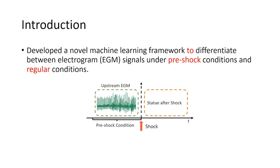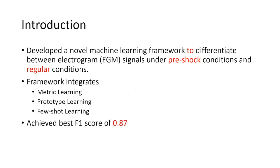This framework is designed to categorize EGM signals into one of two categories, normal or indicative of impending shock conditions. As demonstrated in the figure, our method focuses on examining signals that come before a shock event, what we call upstream samples, as well as those from normal conditions, which we refer to as presenting samples.